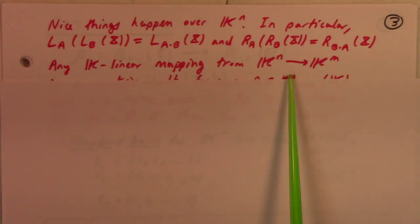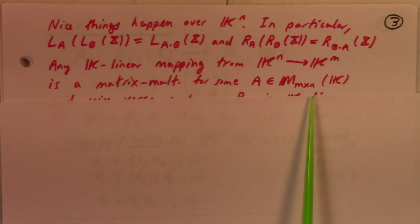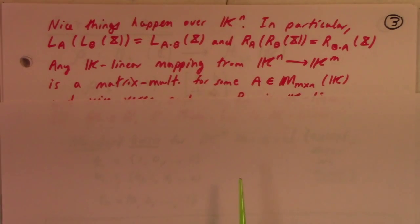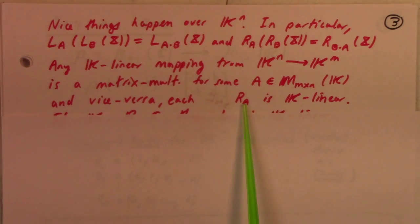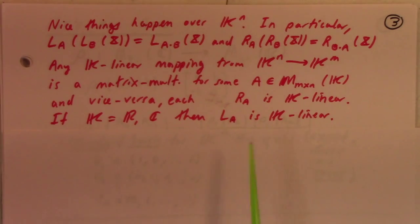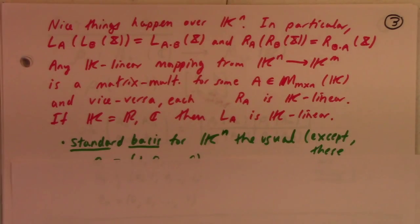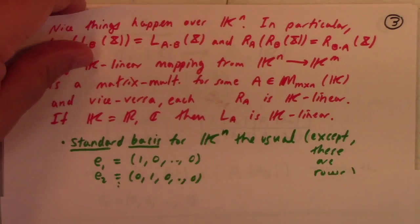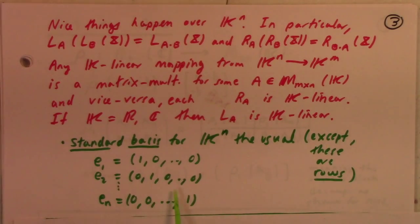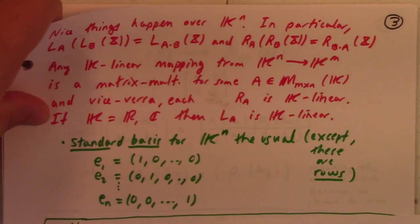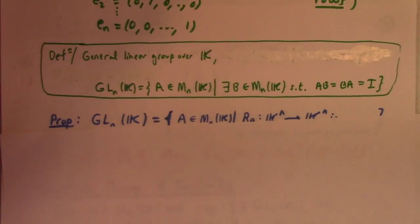Any K-linear mapping from K^N to K^N is also a matrix multiplication with respect to some N by N matrices over K — this is the fundamental theorem of K-linear algebra. Every linear map is represented by a matrix multiplication, and vice versa; these are K-linear maps. We also have a standard basis, as usual: E1 through EN with ones in just one spot and zero elsewhere — except these are rows.